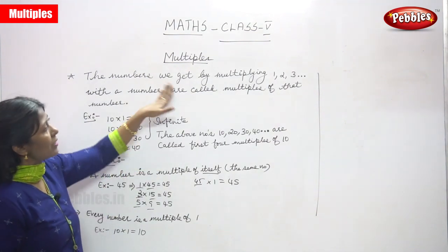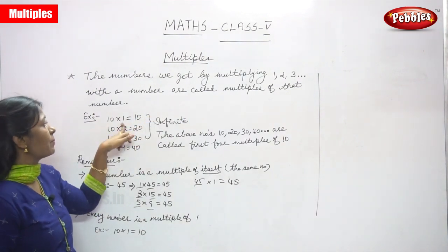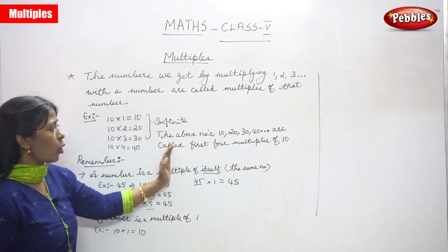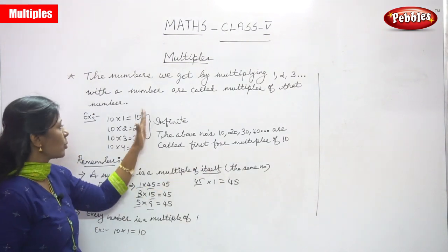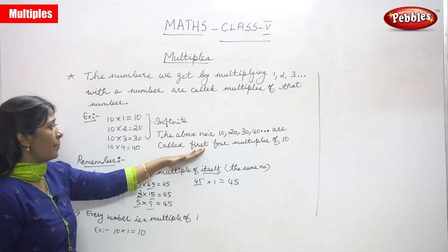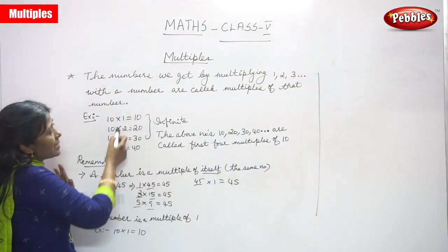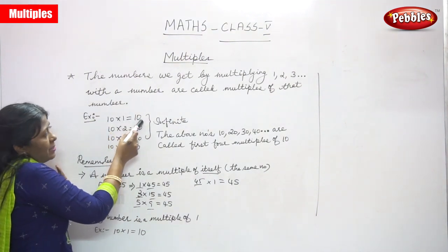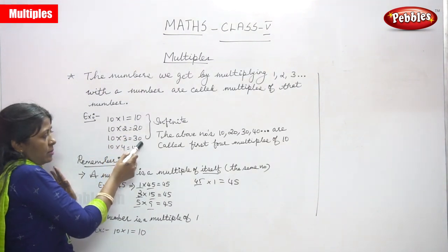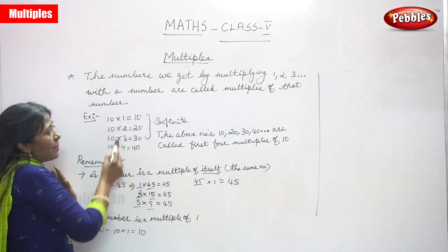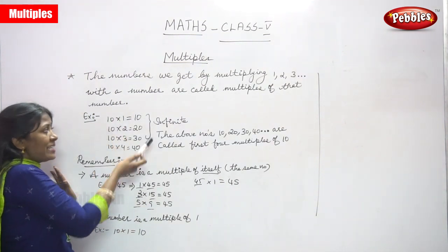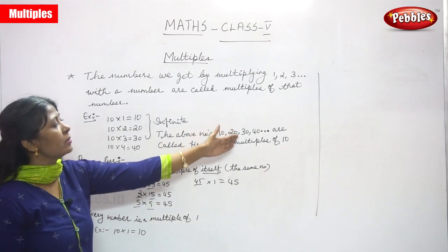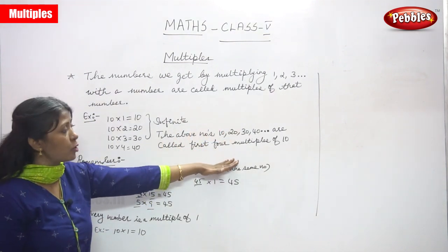If any number is multiplied by 1, you get the same number. The numbers 10, 20, 30, and 40 are called the first four multiples of 10. Multiples are infinite — they keep going on — unlike factors, which are finite. These also relate to the multiplication table of 10.